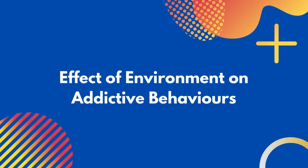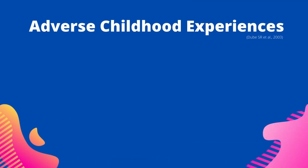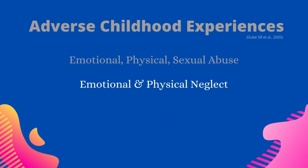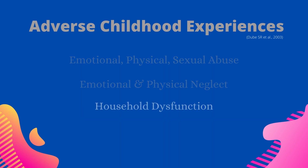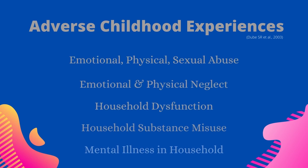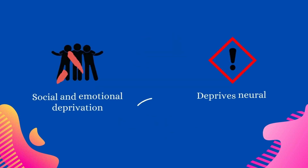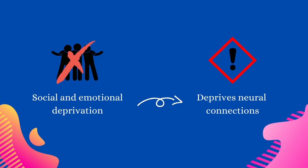Brain development is also largely impacted by the environment a child grows up in. A recent study investigated adverse childhood experiences and illicit substance use. The study revealed that emotional, physical, and sexual abuse, emotional and physical neglect, household dysfunction, household substance misuse, and untreated mental illnesses all increase adolescent dependence on illicit substances. Additionally, social and emotional deprivation increases the risk of addiction among adolescents and is one of the major reasons for brain development hindrance, depriving neural connections.